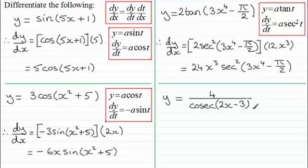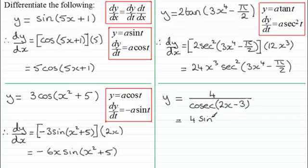Now for the last one: 4 divided by cosec of 2x minus 3. Remember cosec, as a function, is 1 over sine. So here we've got 4 divided by 1 over the sine of 2x minus 3, which simplifies to 4 sine of all of 2x minus 3. This now puts us back into the form y equals a sine t.